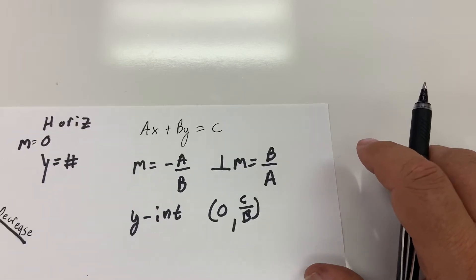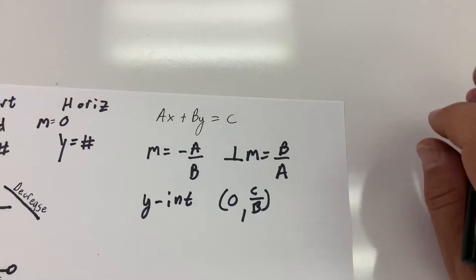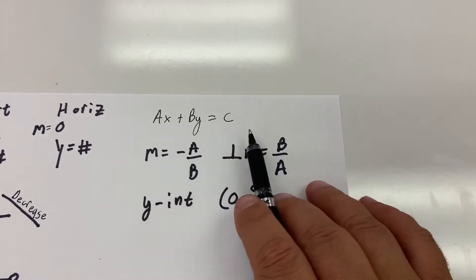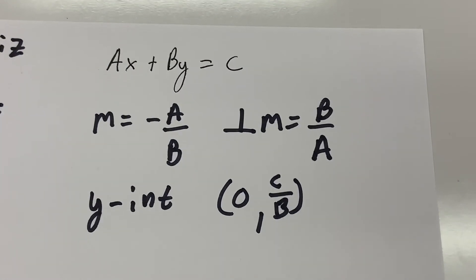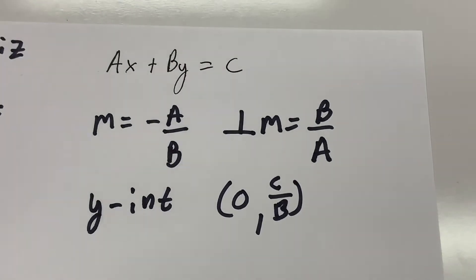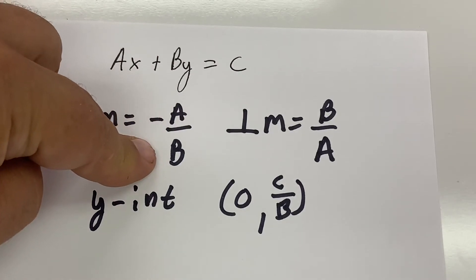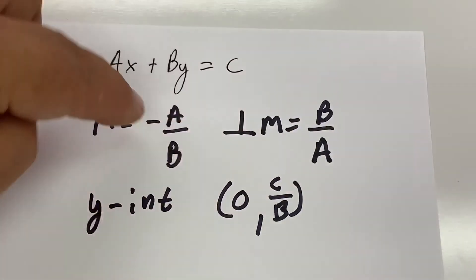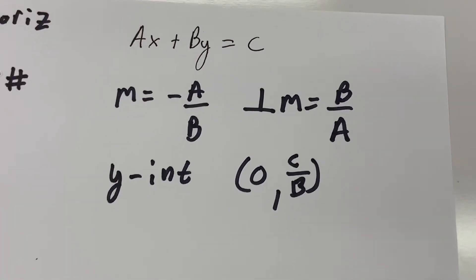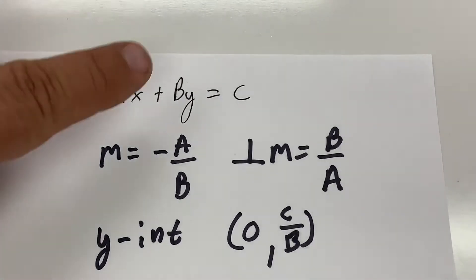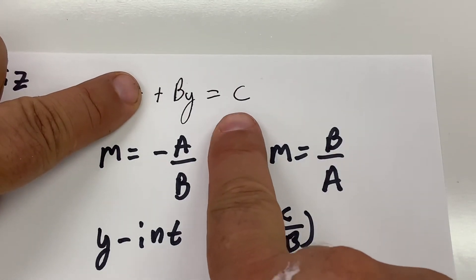If you are good with standard form, you are going to be very successful in this class. If they give you standard form AX plus BY equals C, you can find the slope immediately by taking the opposite of A and dividing it over whatever B is. Perpendicular slope is a negative reciprocal of that, so it's just B over A. The y-intercept: cover up the AX term and do C divided by B.